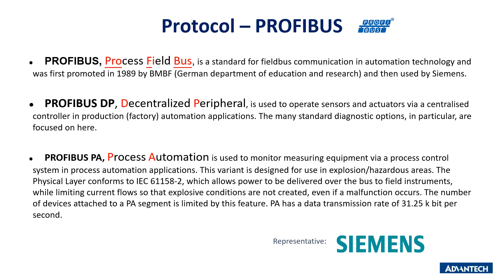Profibus PA, process automation, is used to monitor measuring equipment via a process control system in process automation applications. This variant is designed for use in explosion or hazardous areas. The physical layer conforms to IEC 61158-2, which allows power to be delivered over the bus to field instruments while limiting current flows so that explosive conditions are not created, even if a malfunction occurs. The number of devices attached to a PA segment is limited by this feature. PA has a data transmission rate of 31.25 kbit per second.